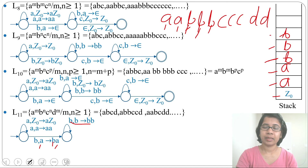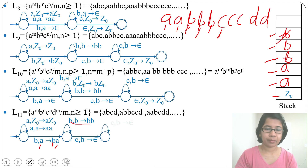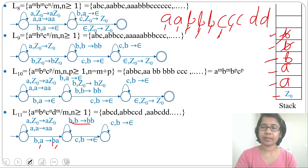For input c, we pop b: create another state with transition (c, b) → ε. This is a self-loop: for each c we pop one b. After all c's pop all b's, for input d we pop a: create another state with (d, a) → ε. This is also a self-loop: for each d we pop one a. Finally, by ε input, we go to the final state by skipping Z0.